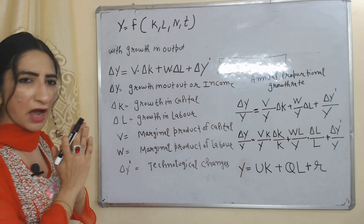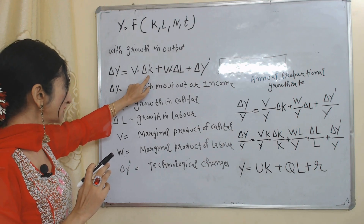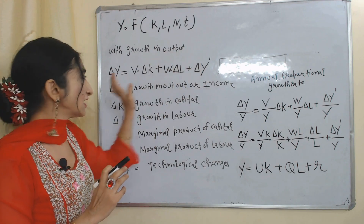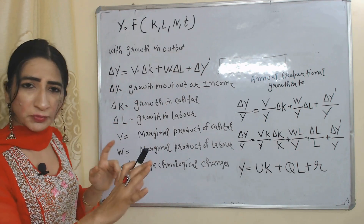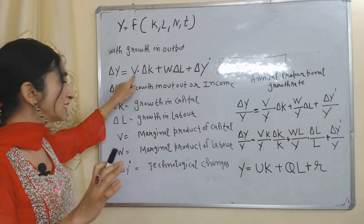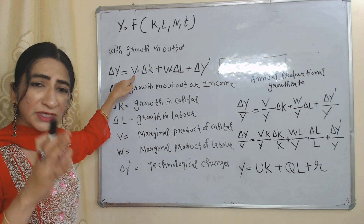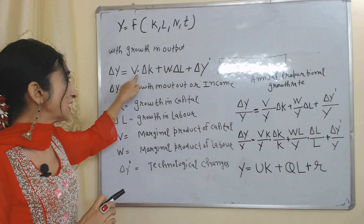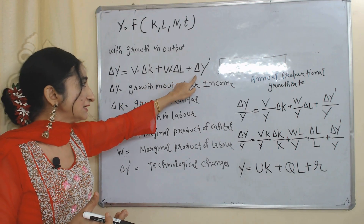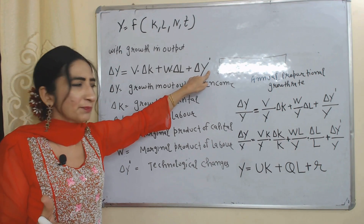Now we will see our new equation for growth in output: ΔY = V·ΔK + W·ΔL + ΔY'. Here ΔY is growth in output or growth in income, ΔK is growth in capital, and V is the marginal product of capital — needed to know capital's contribution to national income. ΔL is growth in labor, W is the marginal product of labor, and ΔY' represents technological progress.